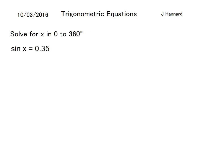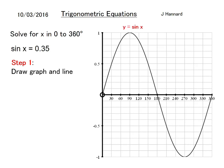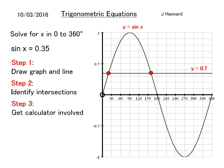Here's another one: solve for x in 0 to 360, sin x equals 0.35. Step one, draw your graph and the line where they meet and identify the intersections. But on this one it's slightly different to the cos graph because you won't be taking off 360 this time, you'll be taking off 180 because the distance between 180 and that answer is the same between 0 and that answer.